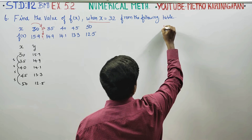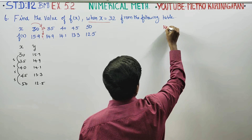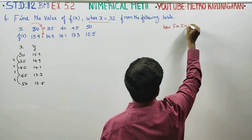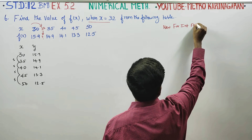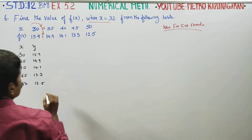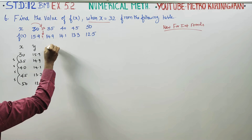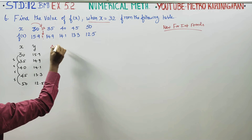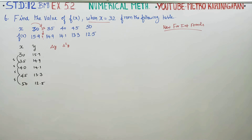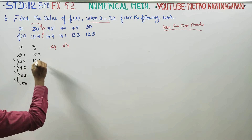We apply the Newton Forward Interpolation Formula. For forward interpolation, we use delta y — the first difference — and delta squared y, the second difference.